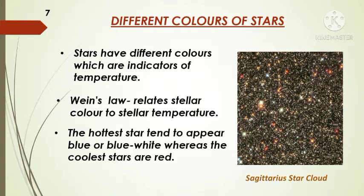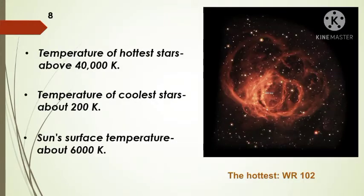Wien's law relates stellar temperature to stellar color. Blue colors dominate the visible light output of very hot stars. On the other hand, cool stars emit most of their visible light energy at red wavelengths. The color of stars therefore provides a measure of its intrinsic or true surface temperature. The hottest stars have temperatures of over 40,000 Kelvin and the coolest stars have temperatures of about 2,000 Kelvin. Our sun's surface temperature is about 6,000 Kelvin.